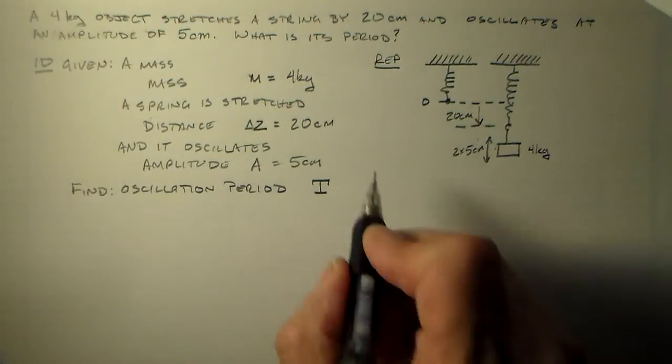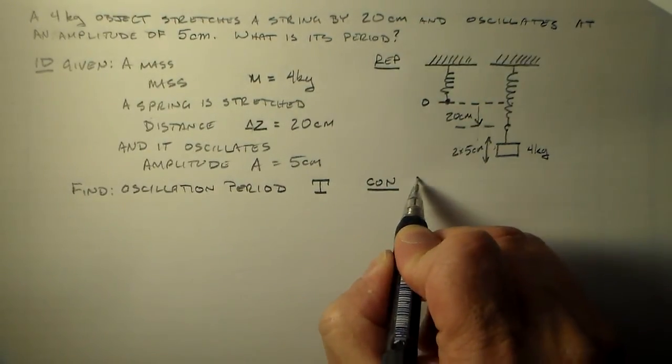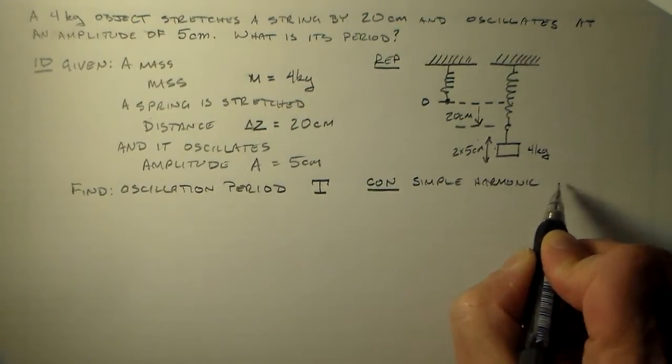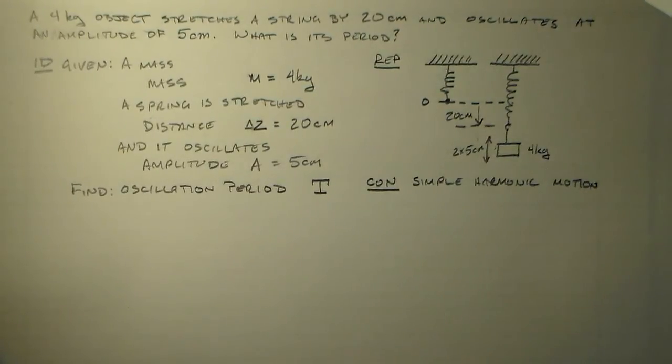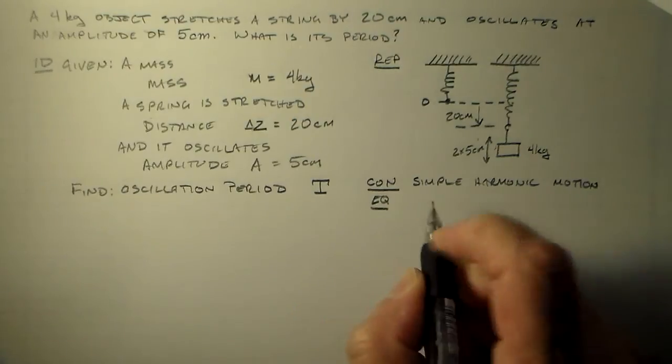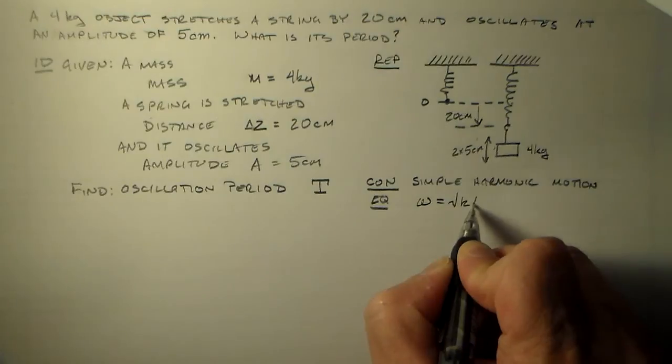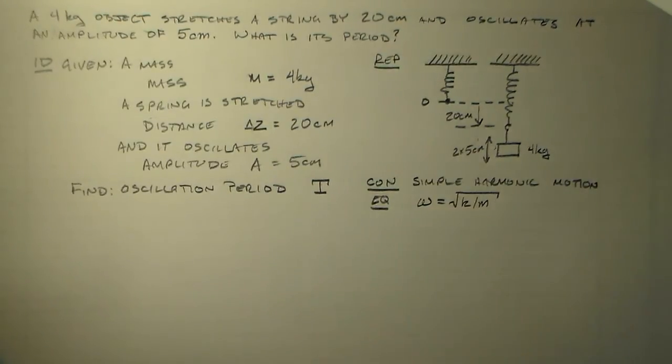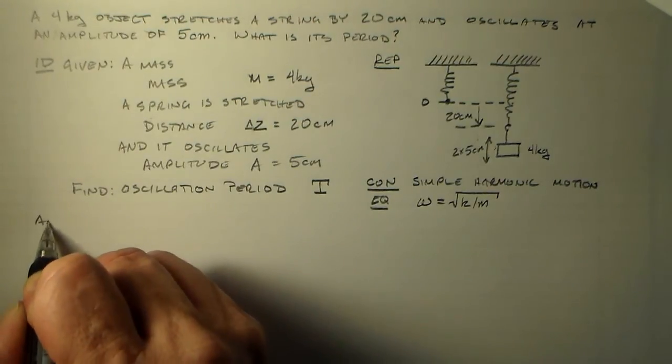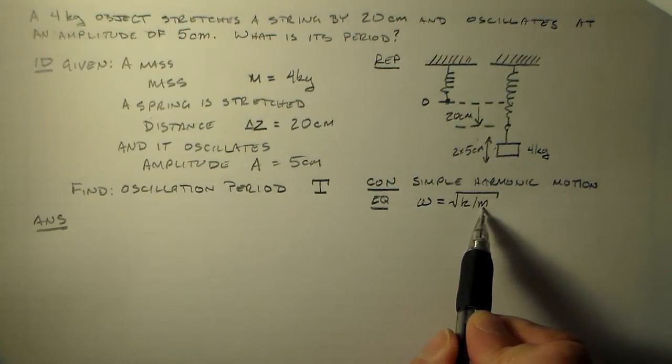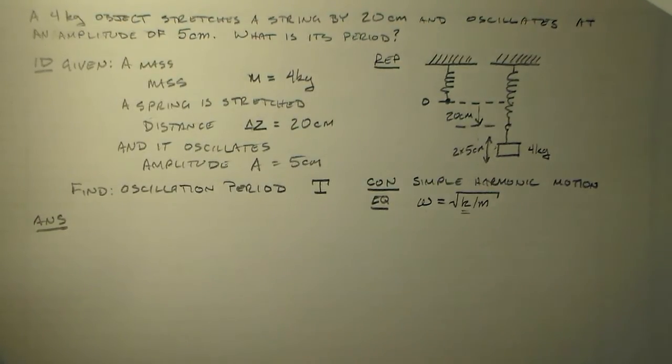Concept, this is simple harmonic motion. Equation, what's a good equation for this? How about the frequency of a simple harmonic oscillator, which is root k over m? So that's what we have to work with. And now we want to get an answer. We don't know k. We know m. We want to know omega. So we have to find some way to find k.